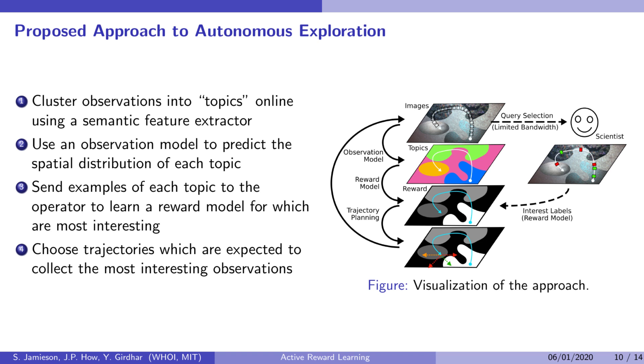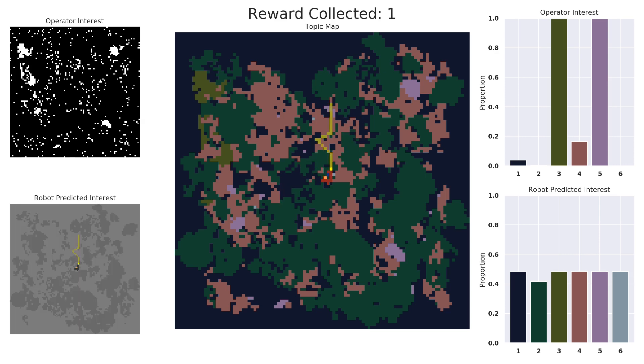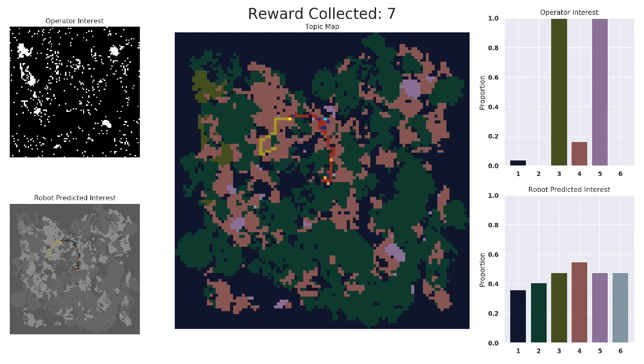We used simulations of a scientific ocean exploration task to demonstrate our approach. In the center, we see a topic map based on a map of a real coral reef. The dark yellow square is a simulated robot, and the faded yellow line is its current planned trajectory.